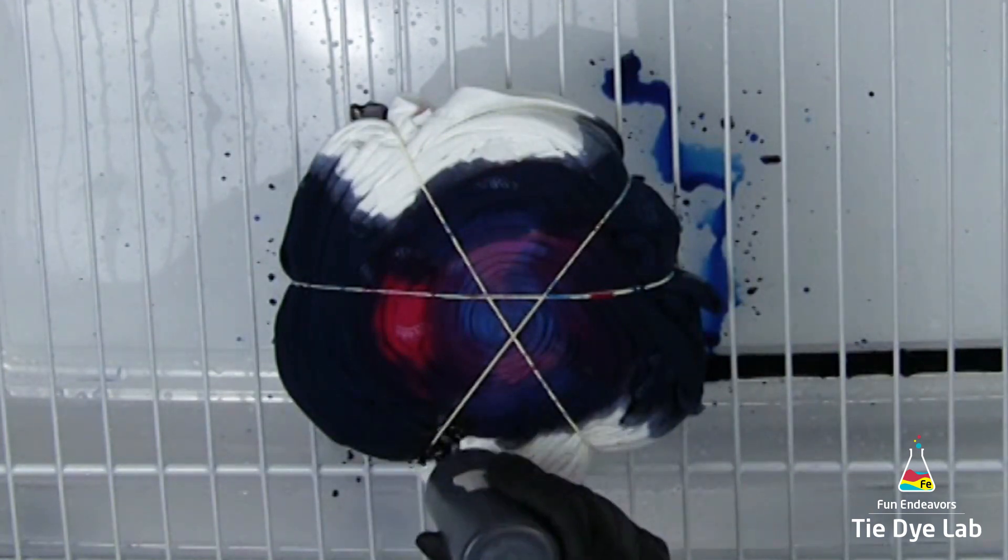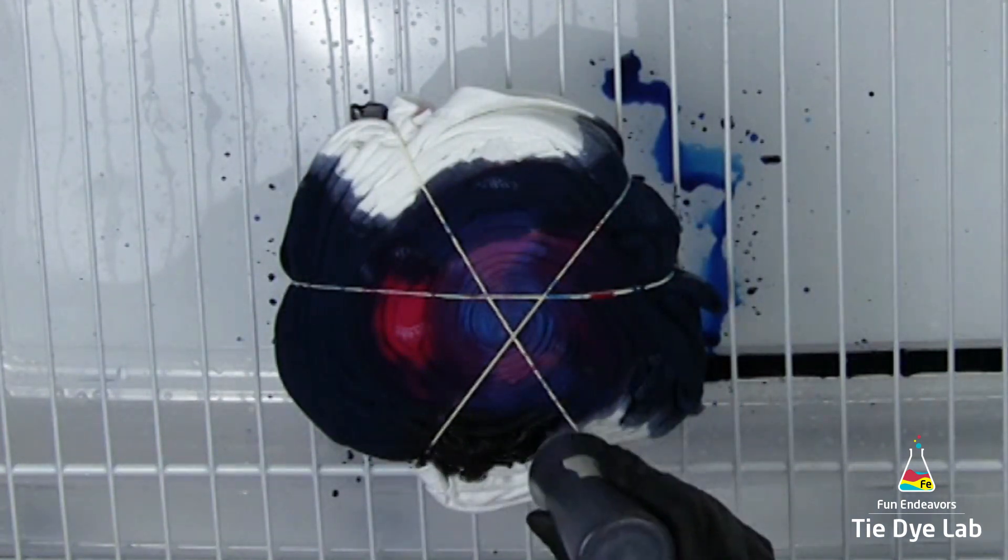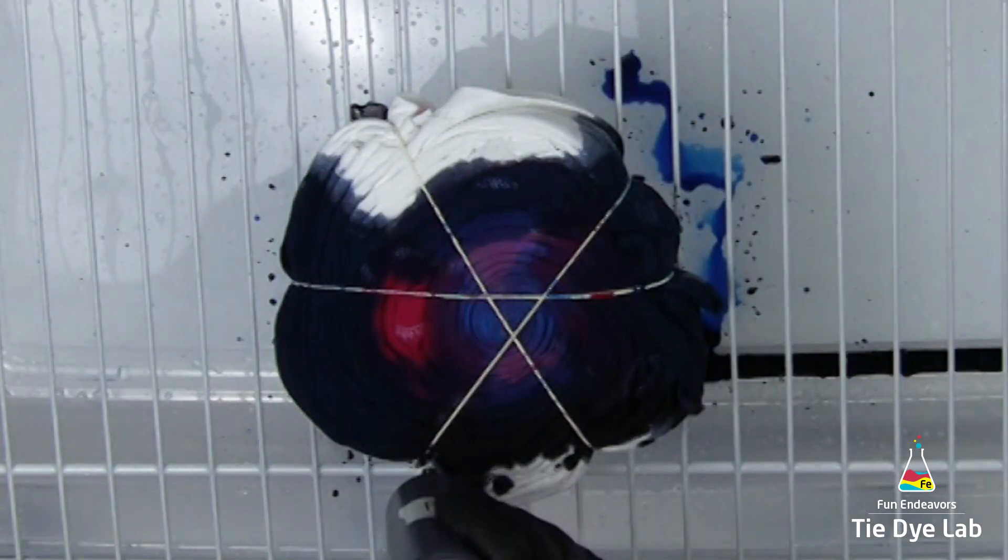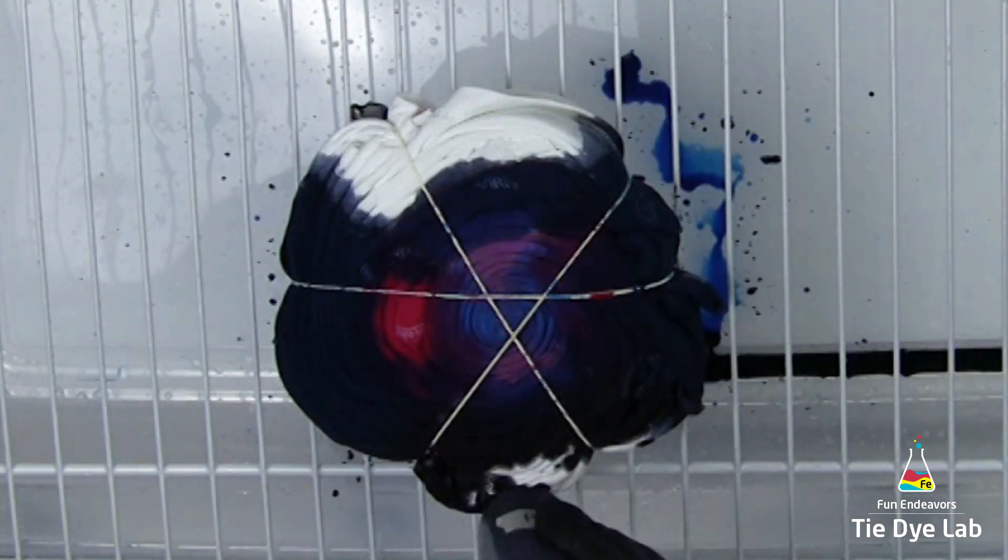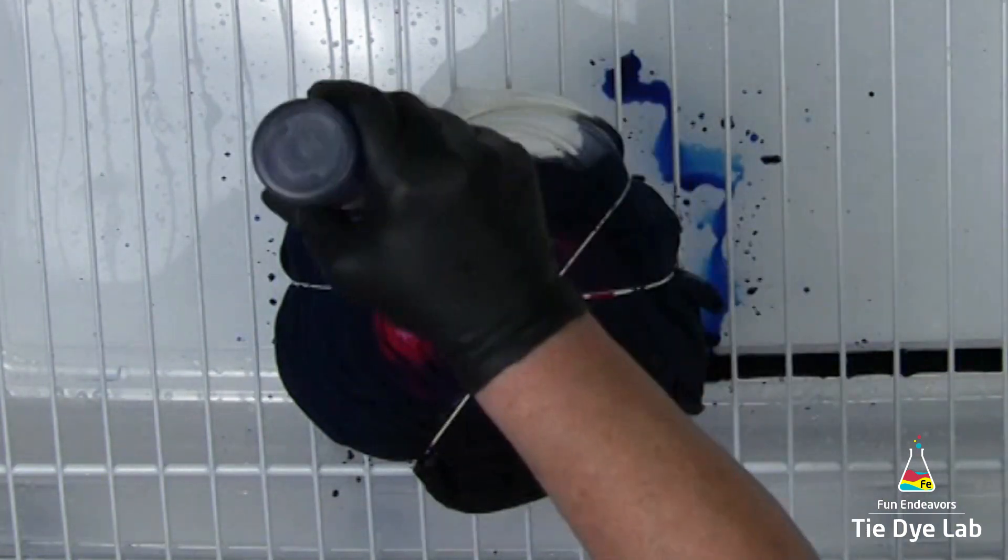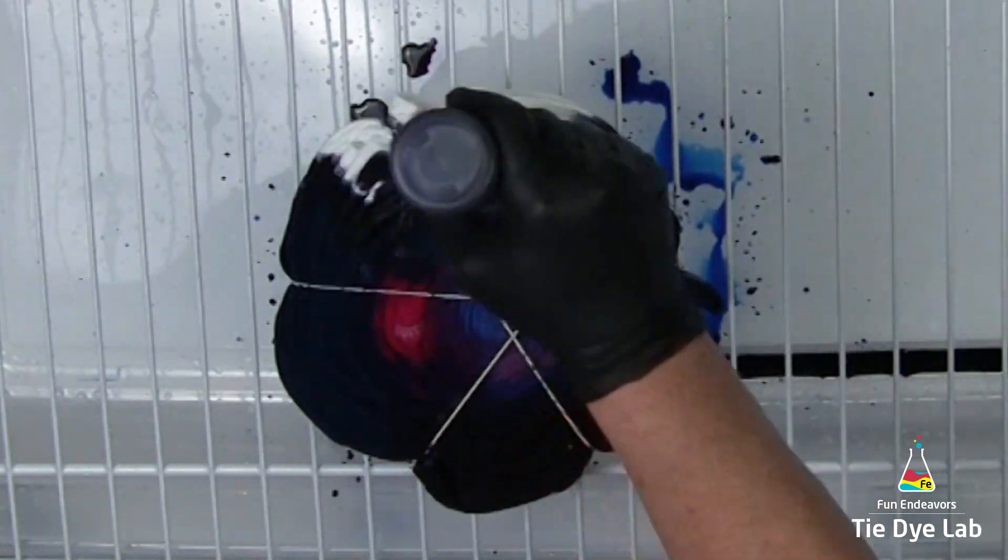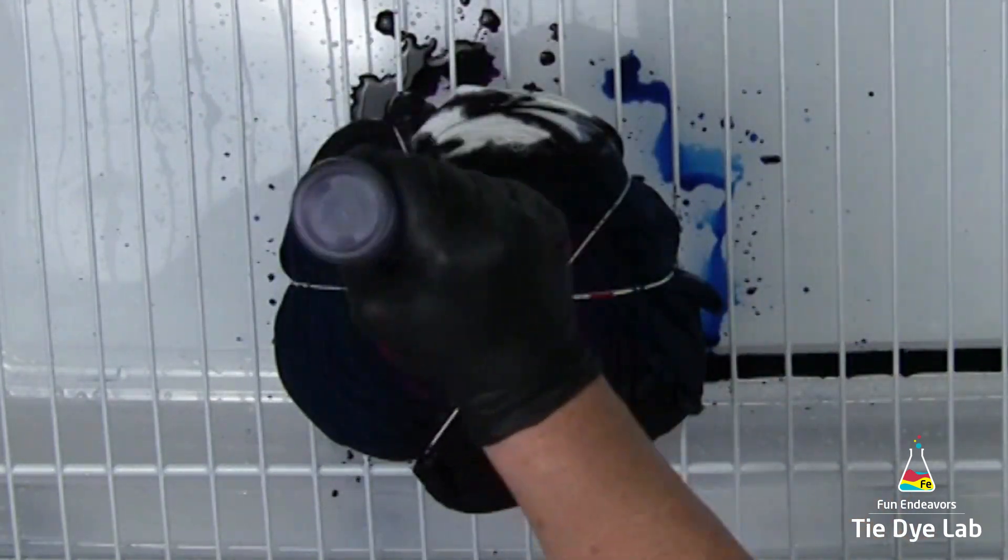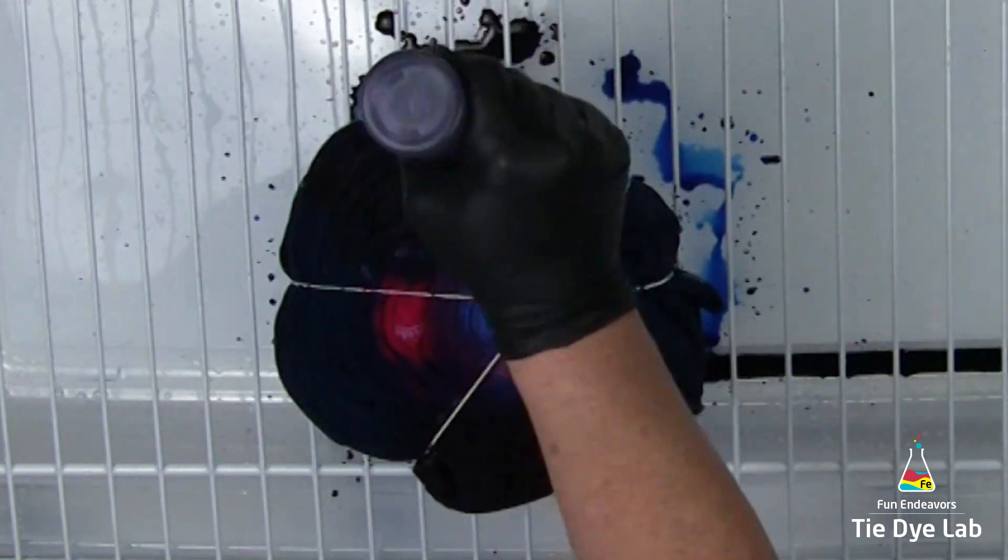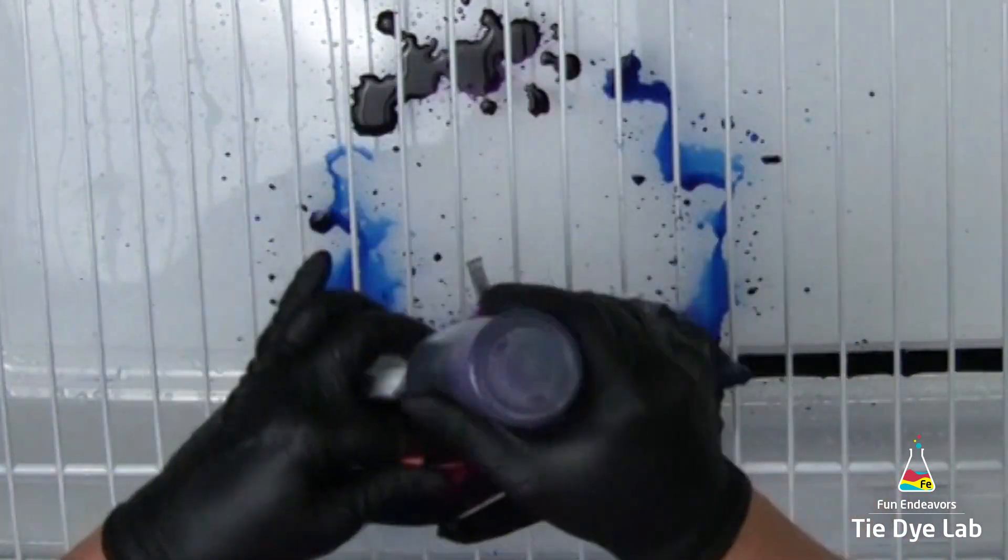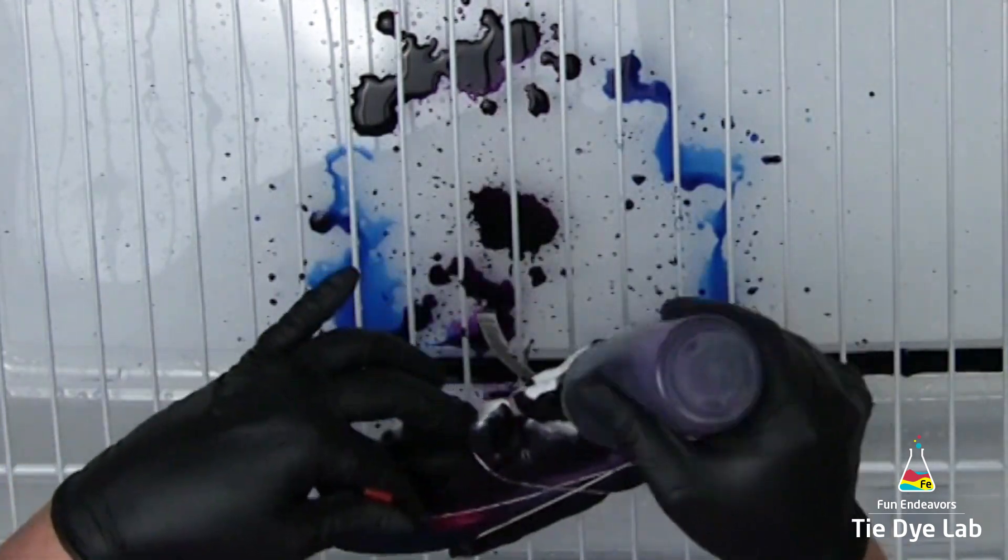And the two outer areas are royal purple from Grateful Dyes. Here again, I'm making sure I get the sides of the shirt.